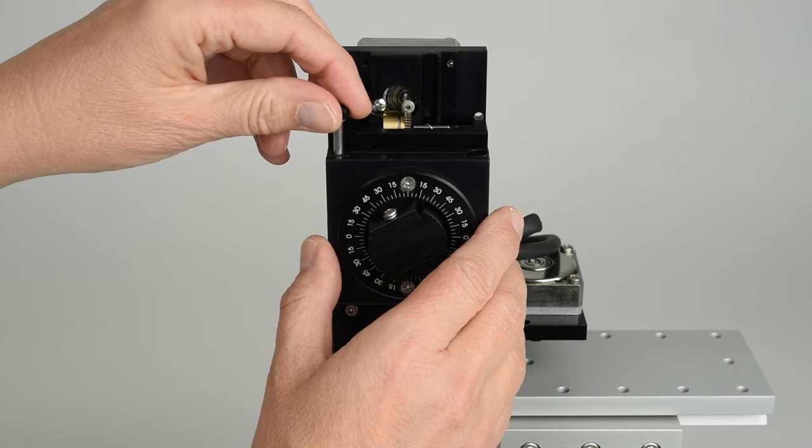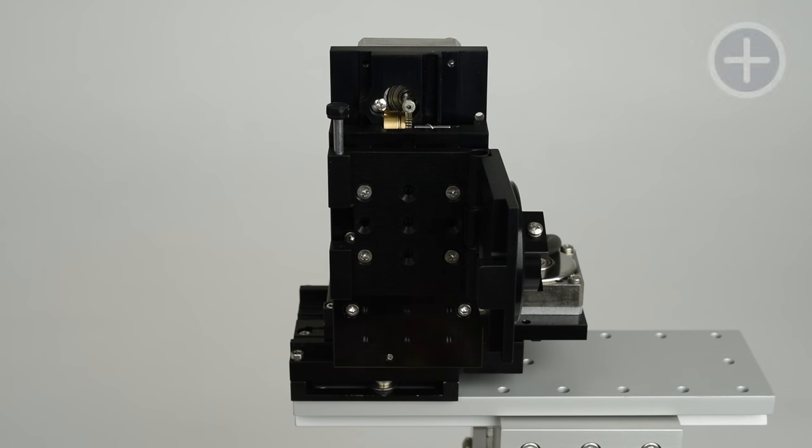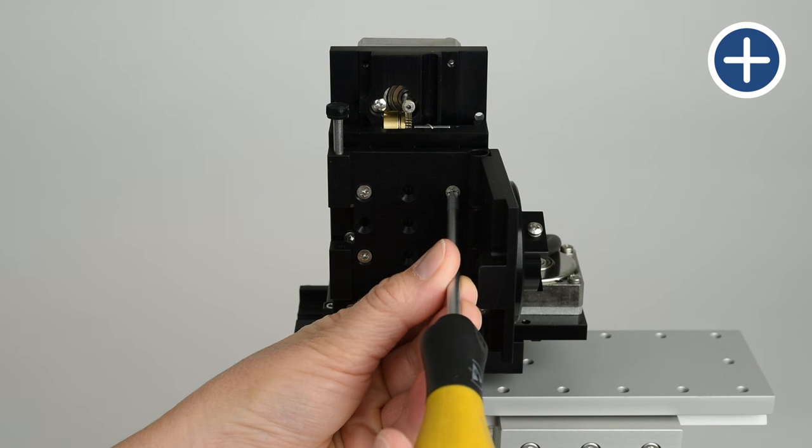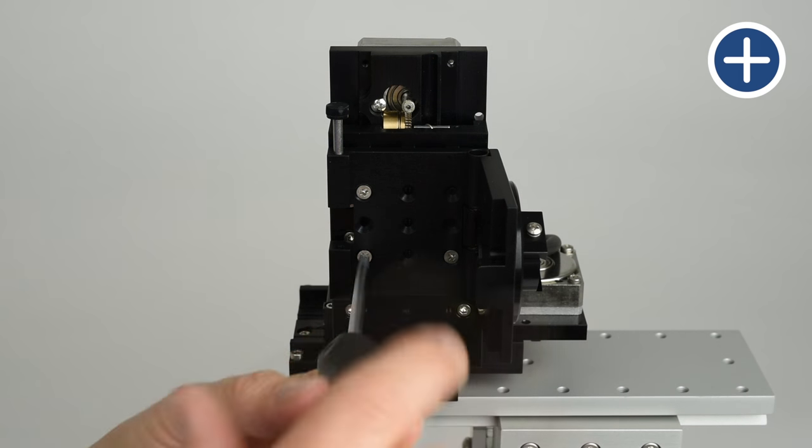First, remove the swing gate from the front of the manipulator by removing the four Phillips screws that attach the swing gate to the manipulator.